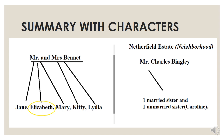Now let's move to the summary along with the characters. The story starts with Mr. and Mrs. Bennett, who have five daughters. Mrs. Bennett is portrayed as a rather silly woman who is obsessed with getting her daughters married as soon as possible and doesn't seem very educated. Her husband, Mr. Bennett, is a very philosophical man, often seen contemplating various thoughts. The very first line of the novel — a famous dialogue — is uttered by Mr. Bennett: "It is a truth universally acknowledged that a single man in possession of a good fortune must be in want of a wife."